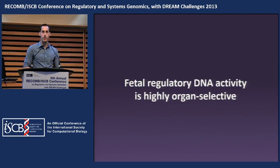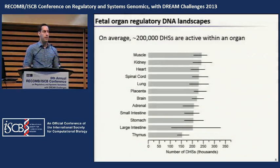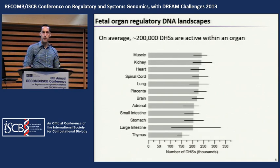Our first goal was to take this large set of regulatory DNA and characterize its activity across different organs. A given organ on average has about 200,000 regulatory elements active, shown in gray bars, with horizontal bars showing the range of the data across all different organ types. This average of about 200,000 DHSs is on par with what we see for individual cultured human cell lines.